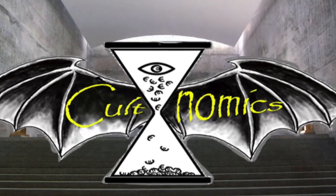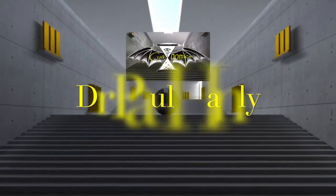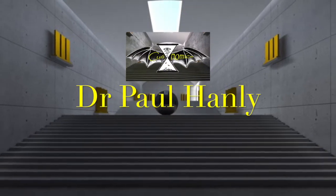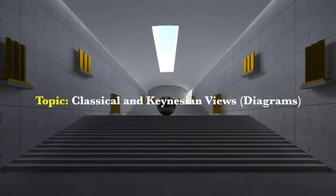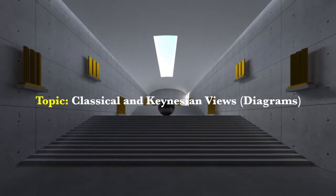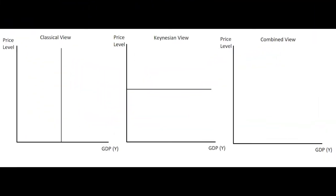Hi guys and welcome to Econonomics. My name is Paul Hanley and today I'm going to be chatting to you about the classical versus Keynesian view of aggregate supply. This video we're going to examine the difference between the Keynesian and the classical view of the macro economy when it comes to the aggregate demand and aggregate supply model.